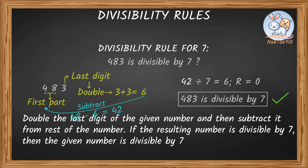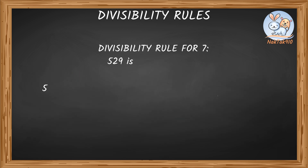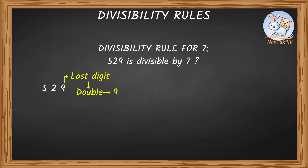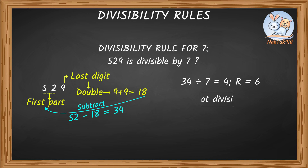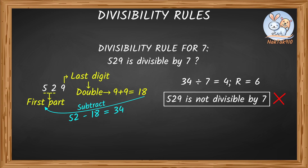Let's look at another example: 529. The last digit is 9. Double it: 9 plus 9 equals 18. Subtract from the first part: 52 minus 18 equals 34. 34 divided by 7 equals 4 with remainder 6. So 529 is not divisible by 7.